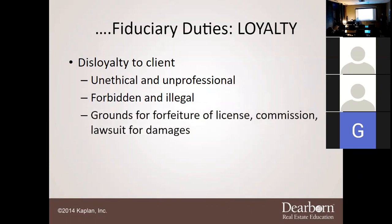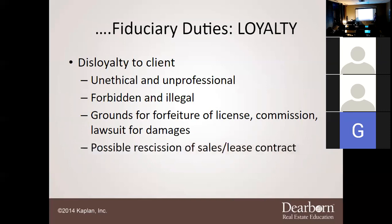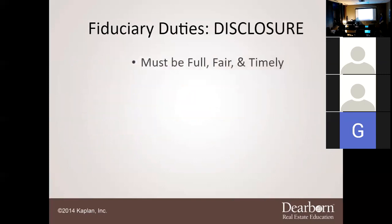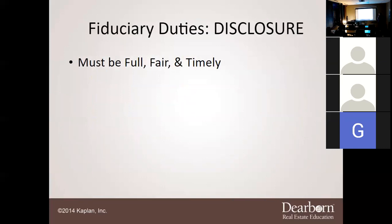Any type of disloyalty to your client can be grounds for a forfeiture of your commission or even a lawsuit for damages. For example, if Travis went and told Miss Davenport that his client would accept $350,000 — that's disloyalty. You cannot be disclosing those things. It can also lead to possible rescission of your license. You provide confidential information — you lose your license if you're disloyal to your client.